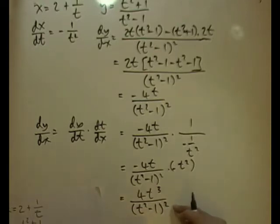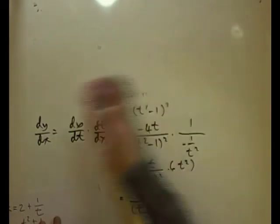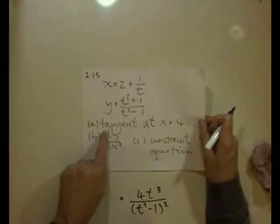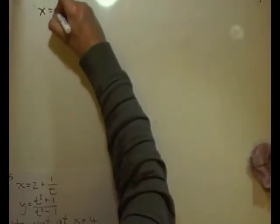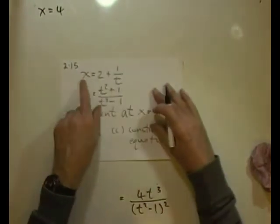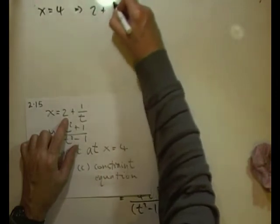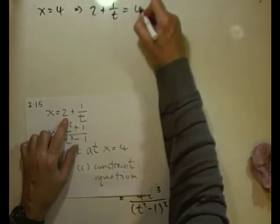That was just the derivative. The next part is to find the equation of the tangent. The question asks for the tangent at x = 4. Using x = 2 + 1/t, we set 2 + 1/t = 4.